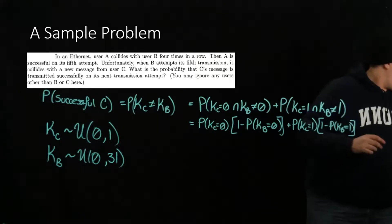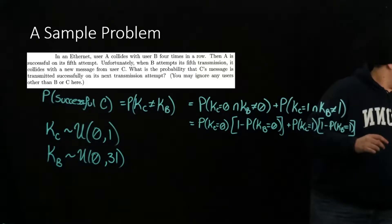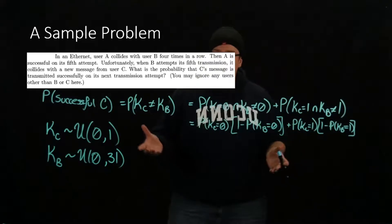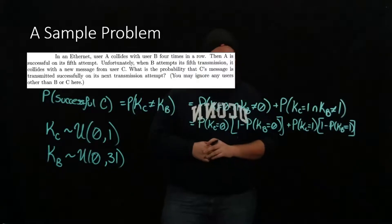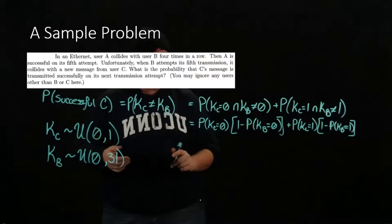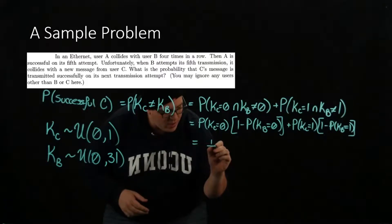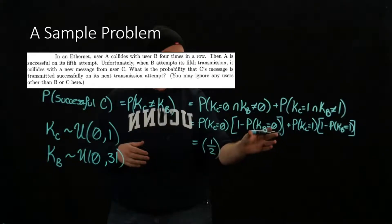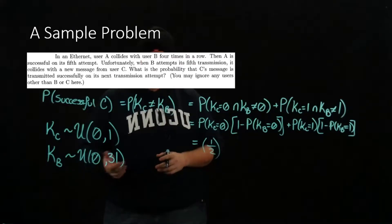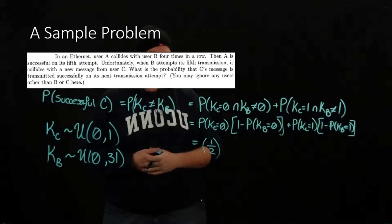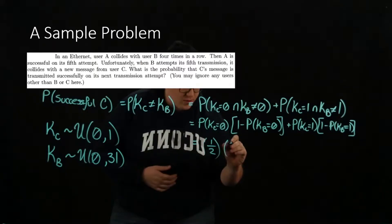Because those are mutually exclusive and exhaustive, we can calculate all of these because we know the distributions on KC and KB. The probability that KC equals 0, there are two options and it's uniformly distributed, so that probability is 1 half. The probability that KB equals 0, it's uniformly distributed and there are 32 options, so 1 minus 1 over 32, or specifically 31 over 32.